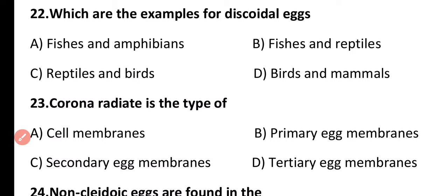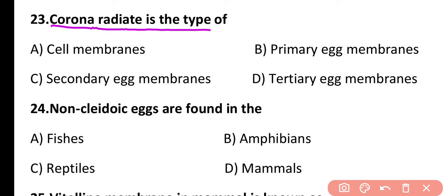Question 23. Corona radiata is the type of cell membrane, primary egg membrane, secondary egg membrane, or tertiary egg membrane? The correct answer is option C. Corona radiata is a type of secondary egg membrane; it is released by the follicular cells of the oocyte and is present around the zona pellucida.